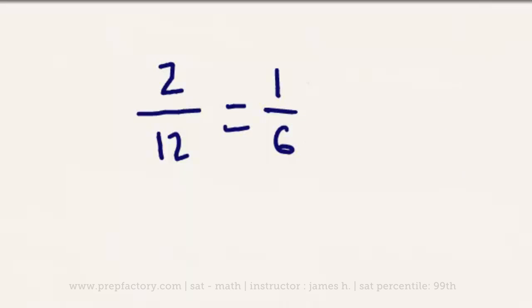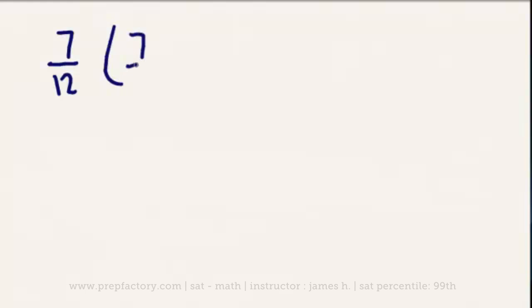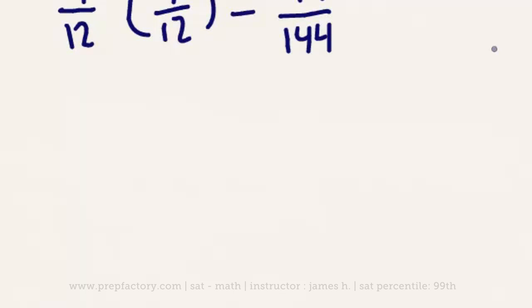To find the probability of two events occurring simultaneously, we multiply the two individual probabilities together. Using the same bag — three red, two blue, seven yellow balls — what is the probability of selecting two consecutive yellow balls with replacement? That means each time we grab a ball, we put it back before selecting again. The probability of selecting a yellow ball each time is 7/12, so the probability of selecting two consecutive yellow balls is 7/12 × 7/12 = 49/144.